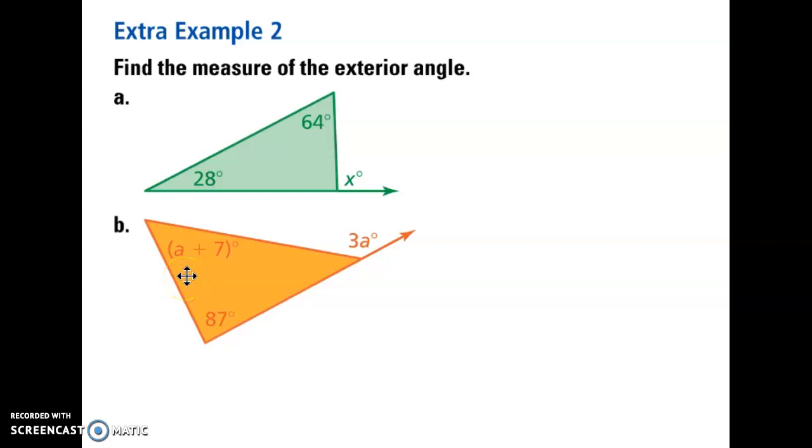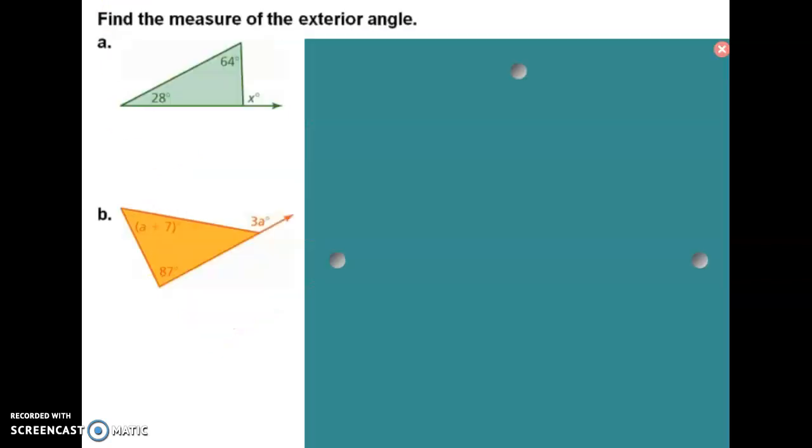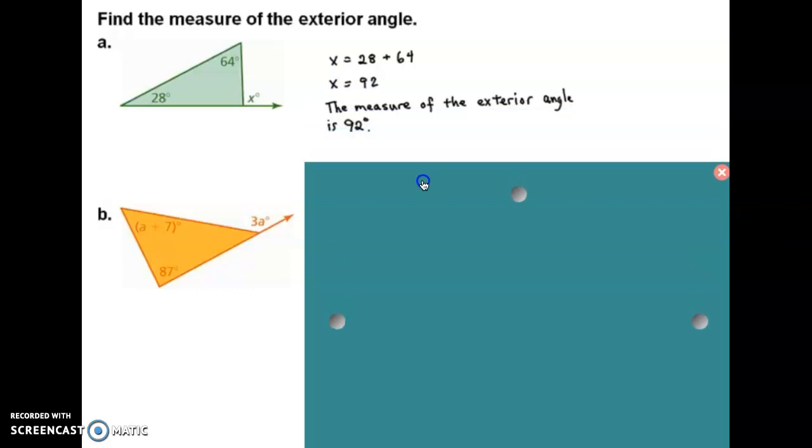Moving on. Go ahead and pause the video. Do these problems. Let's go through it. So, again, we're trying to find the exterior angle. And that first one, this is what it's going to look like. X is equal to 28 plus 64. So, X is equal to 92.